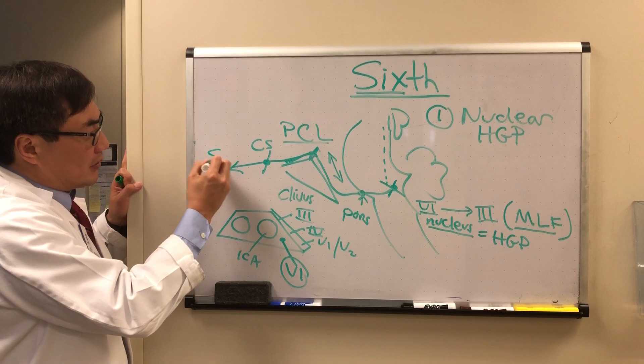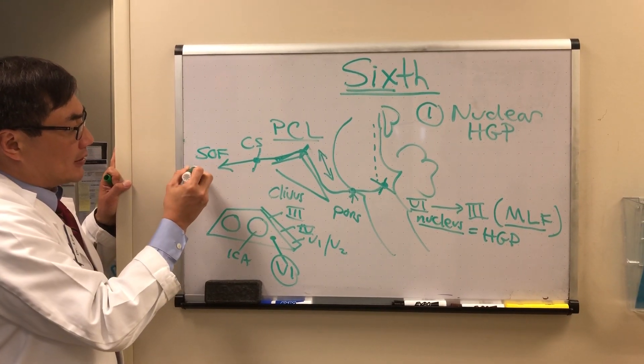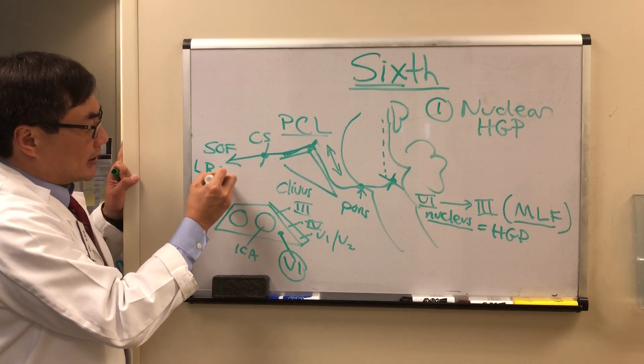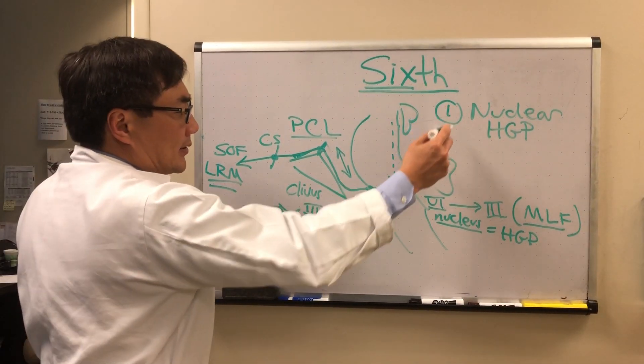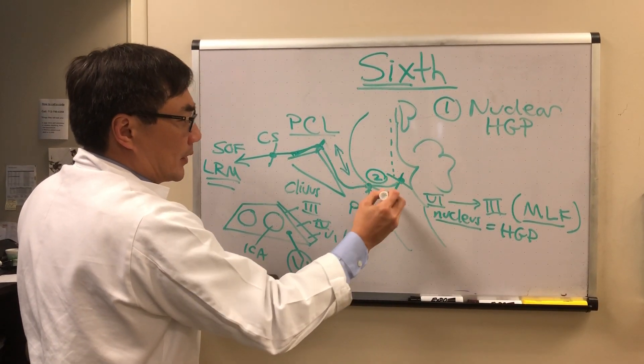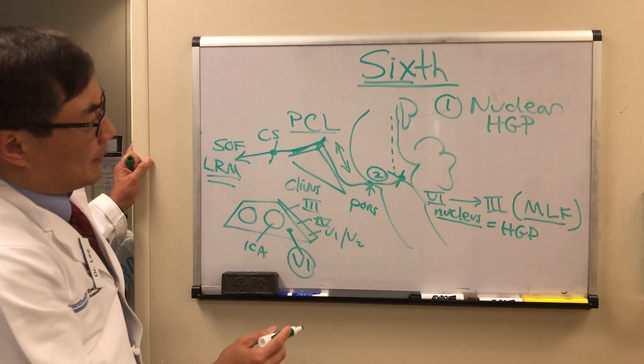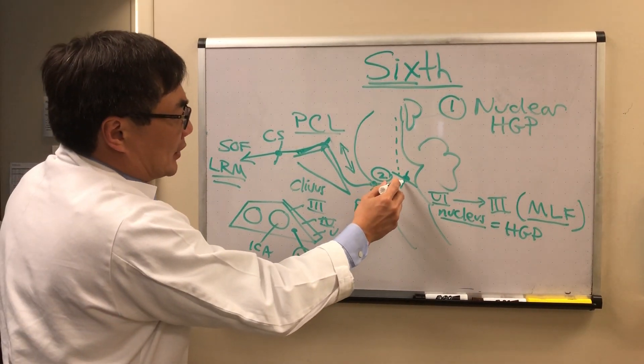So in the cavernous sinus, the sixth is in the substance of the cavernous sinus, and then passes through the superior orbital fissure to reach its target organ, the lateral rectus muscle. So the six syndromes started with nucleus and fascicle, which passes by important structures in the brain stem. And so you can imagine